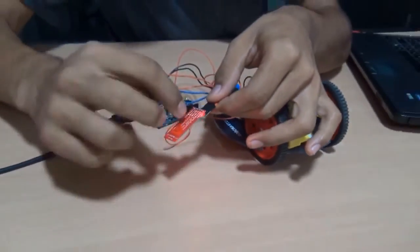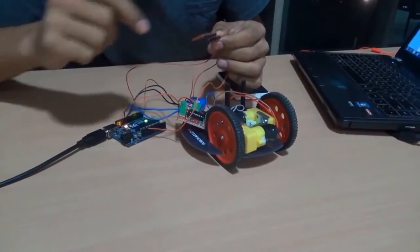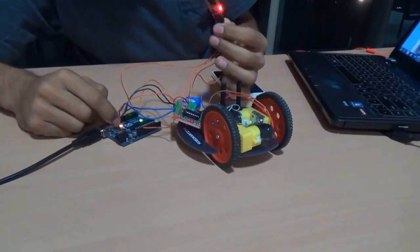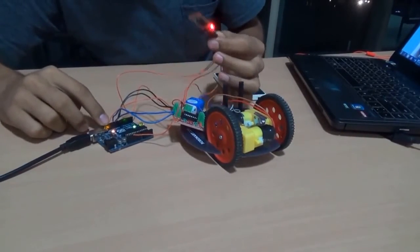So TXD of this module is connected to RXD of Arduino board and RXD of this module is connected to TXD of this Arduino board and VCC to VCC 3 volt and ground to ground.